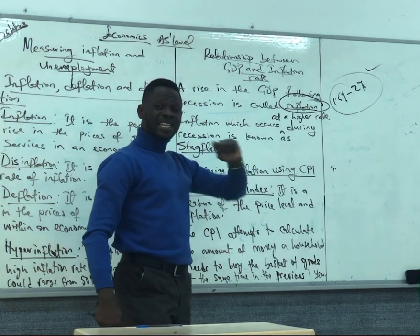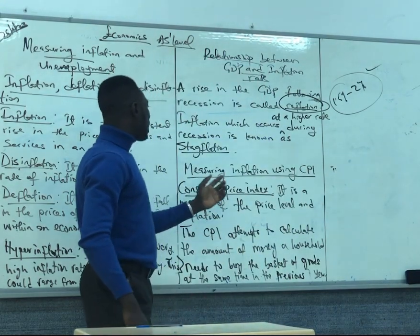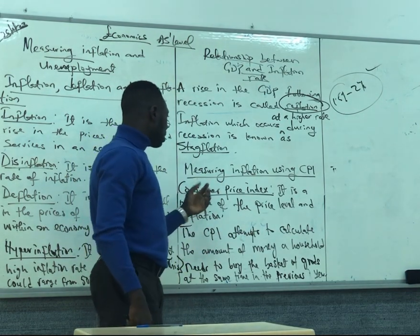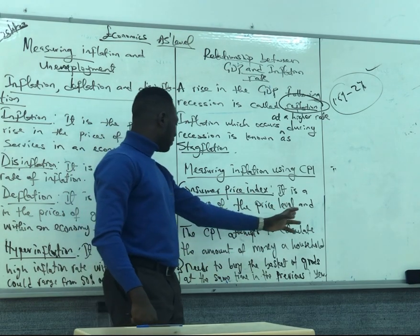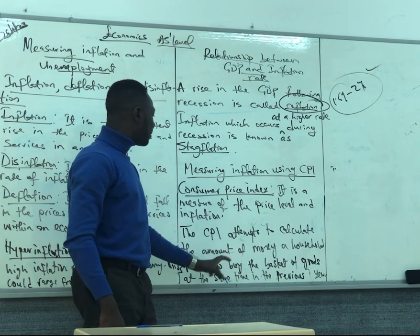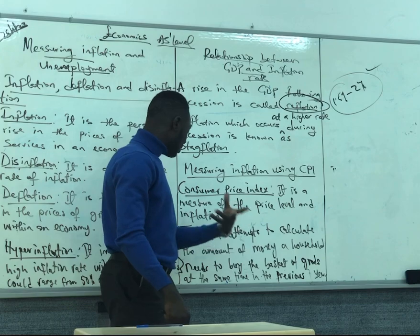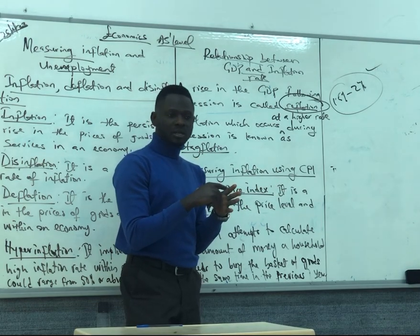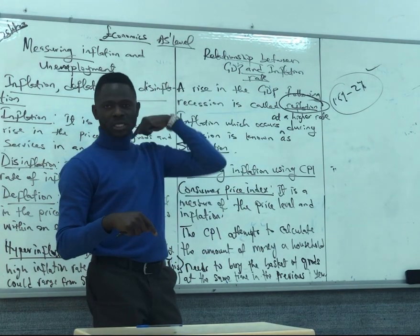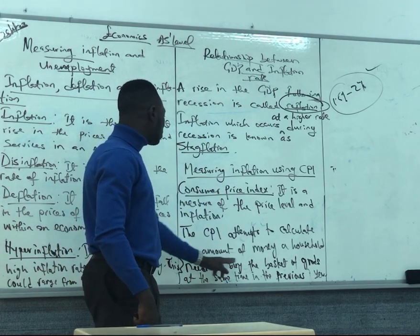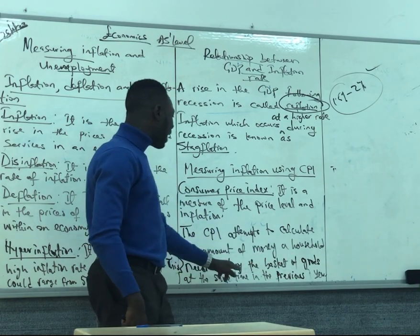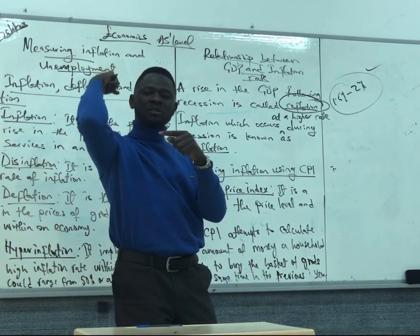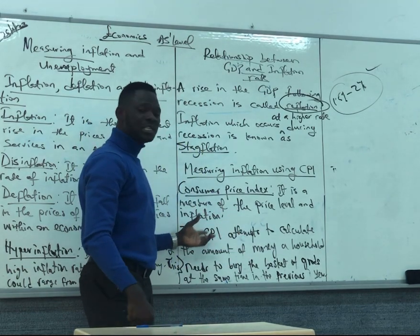Reflation means an increase in the GDP of a country following recession. Then we have the measuring of inflation using CPI — the Consumer Price Index. CPI is a measure of the price index and inflation. The CPI attempts to calculate the amount of money an individual or a household will need to buy the same basket of goods at the present time compared with the previous year. The amount of money you need now to buy the same quantity of goods as the previous year is what we use CPI to calculate.